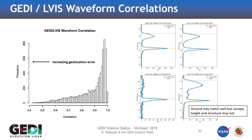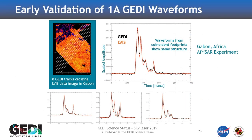We compare GEDI with airborne LiDAR data to assess how well they match. For example, this is GEDI and this is the airborne data — it looks really good. But sometimes you're in the right location and the ground matches, but the canopy doesn't match very well. That's because the geolocation isn't quite right — you might just be a few meters off to the side and missing the top of the canopy. This is data from Gabon over the Afrosar experiment. The red is airborne data and the black is from GEDI, and over these complex forests we're getting a really good match.